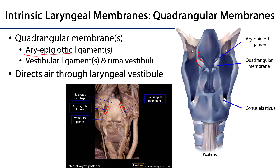The inferior-most or free edge of the quadrangular membranes are the vestibular ligaments. The vestibular ligaments run from the arytenoid cartilage out to the thyroid cartilage. So we can imagine all of this space would be a quadrangular membrane, with another quadrangular membrane on the other side. When invested by mucosa, the vestibular ligament becomes the vestibular fold, or the false vocal fold.